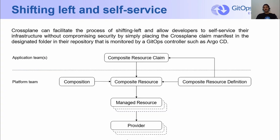Organizations are evolving from centralized management of infrastructure to a self-service model, in which the platform team defines opinionated infrastructure abstractions that application teams can consume on demand without compromising security. With just simple Kubernetes manifests for provisioning cloud resources that require a few parameters in the namespace scope, developers can spin up a new test or sandbox environment quickly for themselves with no lead time, which increases their productivity and autonomy.